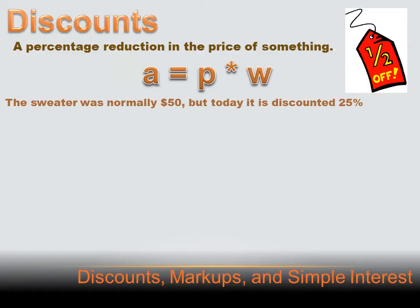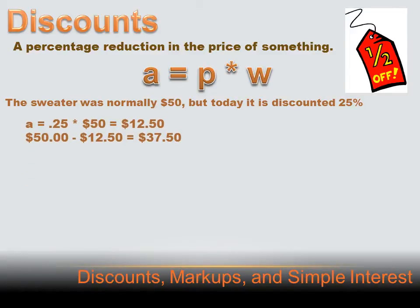Let's look at a problem. Say a sweater was normally $50, but today it's discounted 25%. We use the percent equation: A, the amount of discount, equals P, the percent discount, times W, the original amount. So 0.25 times 50 equals $12.50. Now, $12.50 is the amount of discount — it's not what you pay, it's what you don't have to pay. What you have to pay is the original amount minus that discount, minus $12.50, or $37.50.